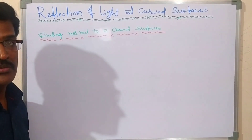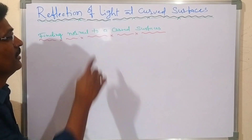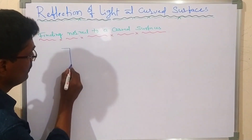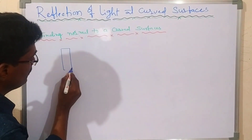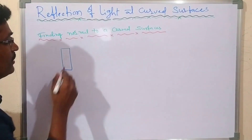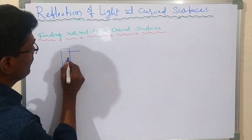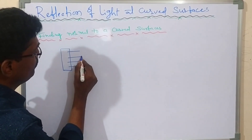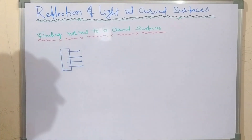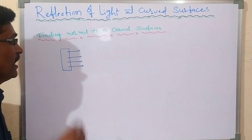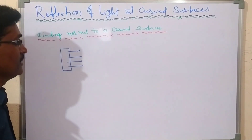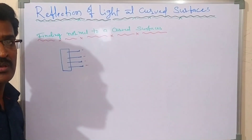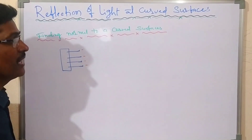Finding the normal to a curved surface. To understand curved surfaces, first you take a piece of a slipper sole. Into that you insert pins. These pins look like normals — they indicate the normal to us. All pins are perpendicular to the surface. This point shows the normal at each point of the surface.